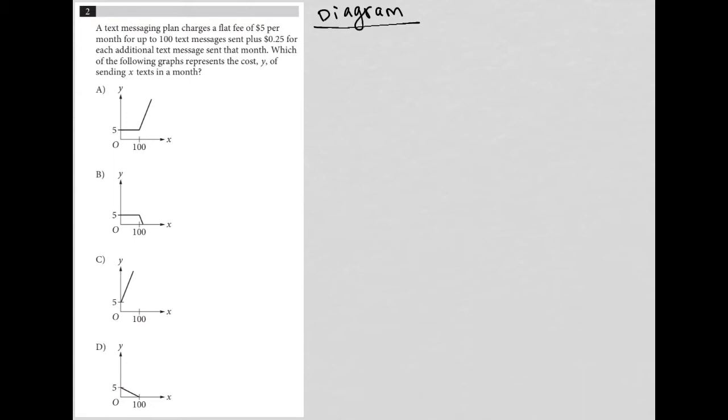Sometimes the answer choices instead have all the visual and the question itself is just like a source of information to match to that visual. So I'm going to call this a diagram question. Let's look at what the information says, and then we'll figure out which one of the graphs matches that info.